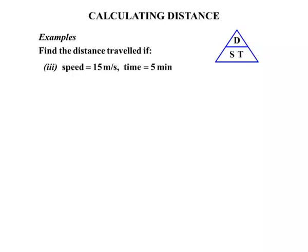Now a third and final example for this lesson. Find the distance travelled if the speed is 15 m a second and the time is 5 minutes. Well, 15 m per second, but we're dealing with 5 minutes. So we've got to think, how many seconds is 5 minutes? 5 lots of 60 works out to be 300 seconds.